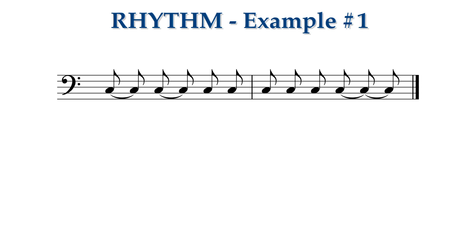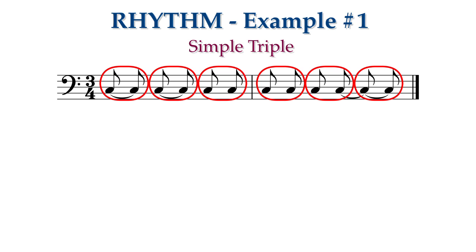Then we can notate the rhythms in simple triple or compound duple meter using our beaming and tying rules. We can see which eighth notes belong to the same beat by bracketing them together. Let's do simple triple meter first, three beats of two eighth notes each.